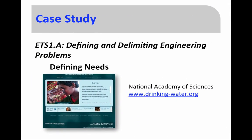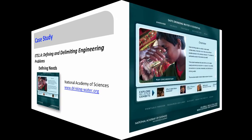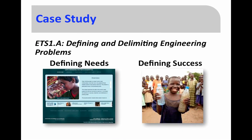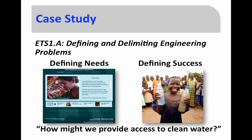The first component of the engineering design process is defining and delimiting engineering problems. One way to do this is to look at a real-world problem — the role of clean water in our world. There's a great website from the National Academy of Sciences that explores this issue in detail using both text and video. It sets up the idea of what clean drinking water is and why it's important, why it's essential for different communities around the world, and why there is a problem in terms of what's going on. This allows us to define a need for studying how to make clean water and to define what success looks like — taking dirty, undrinkable water and turning it into drinkable, clear water. Our engineering problem is clearly defined: how might we provide access to clean water for different communities around the world?